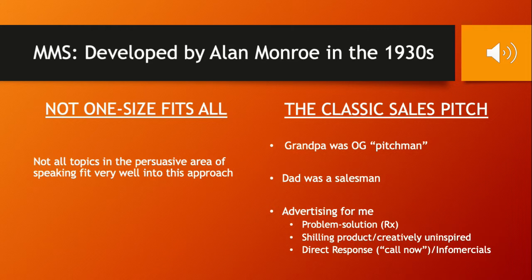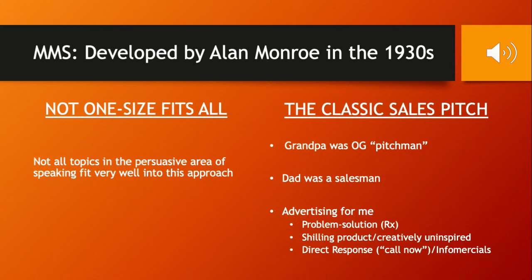You also see Monroe's Motivated Sequence a lot in direct response advertising — the older model with 1-800 call-now or 'act now and get these bonuses for free.' Anything that tries to create urgency is called direct response marketing. It's actually a lot cheaper than mass marketing to buy, so many companies have gotten clever about working around it to qualify for the cheaper media buy.